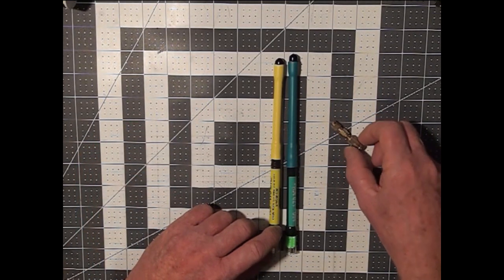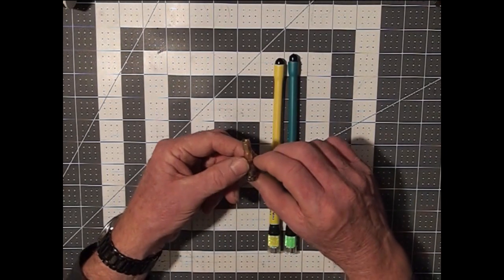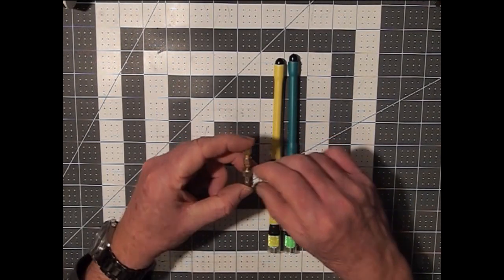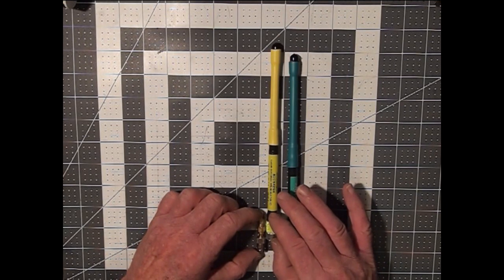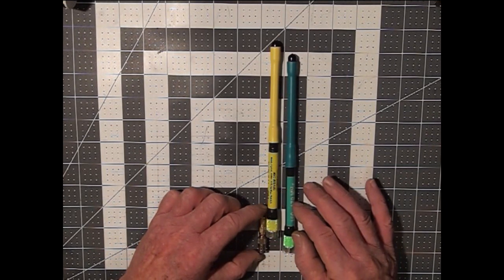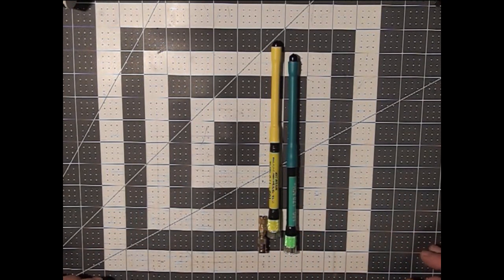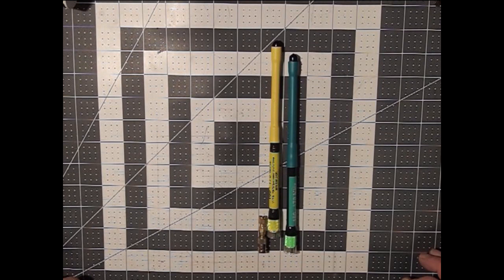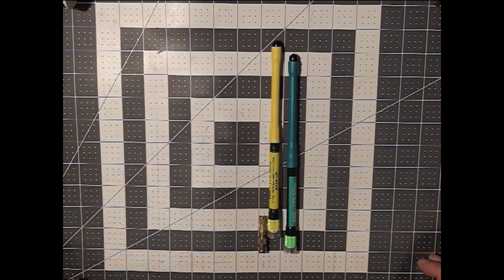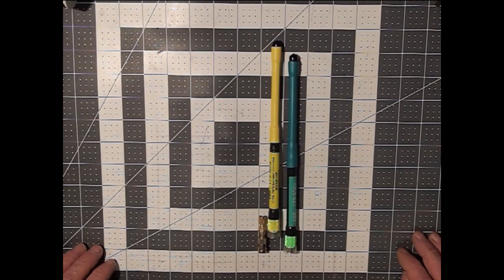So what happens when we increase the length? Let's say we used an adapter that took it to about half that amount. Now you can see that we've increased the length of that 170, and effectively we've probably turned that into an antenna with a much lower frequency such as 145 or 150.